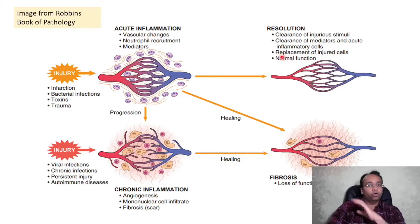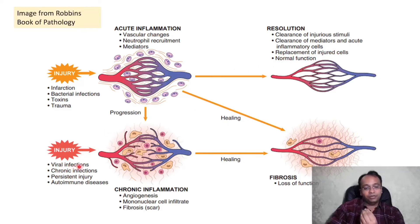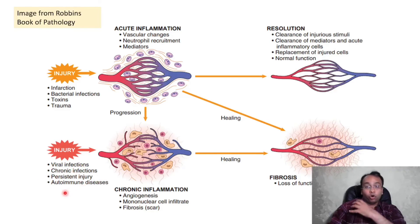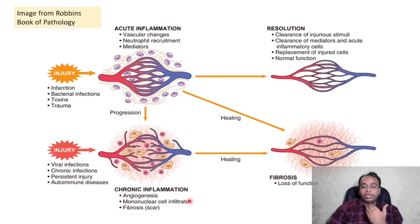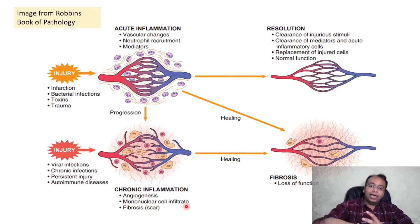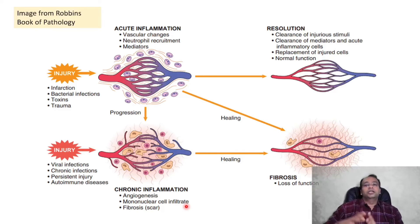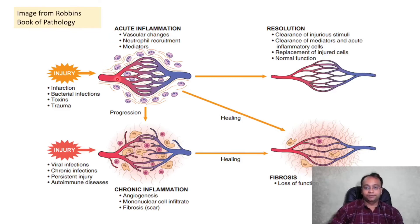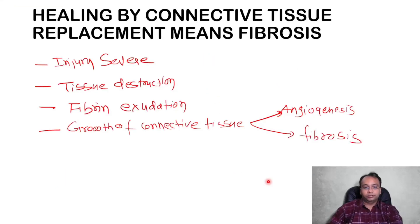The affected tissue will function normally after resolution. But suppose the injurious stimuli persist — such as viral infection, chronic infection, persistent injury stimuli, or autoimmune disease — in all those conditions acute inflammation can progress to chronic inflammation, in which there will be angiogenesis and fibrosis. The destructed tissue will be replaced by fibrosis, and this chronic inflammation will heal by fibrosis.